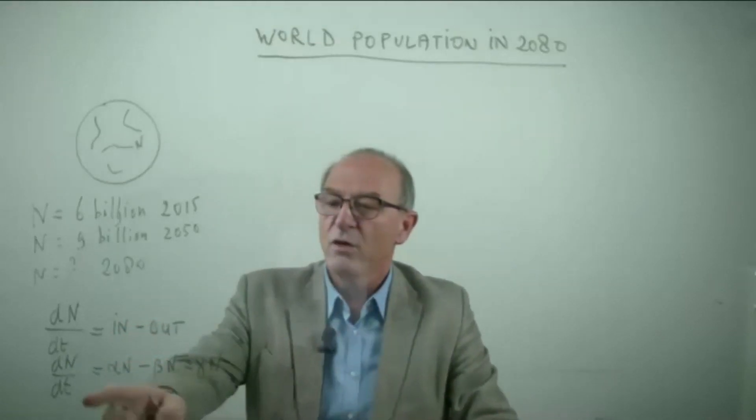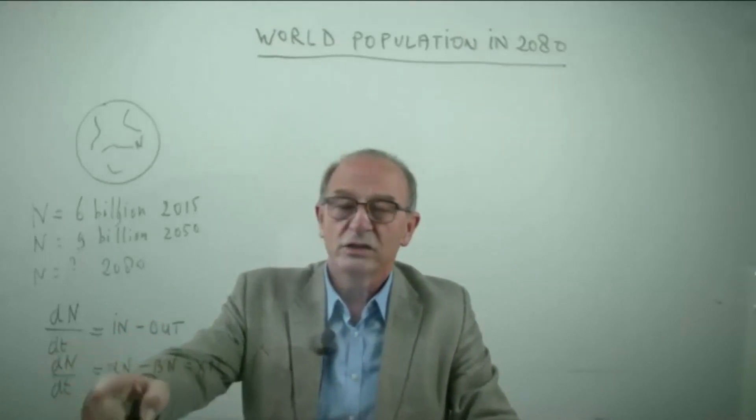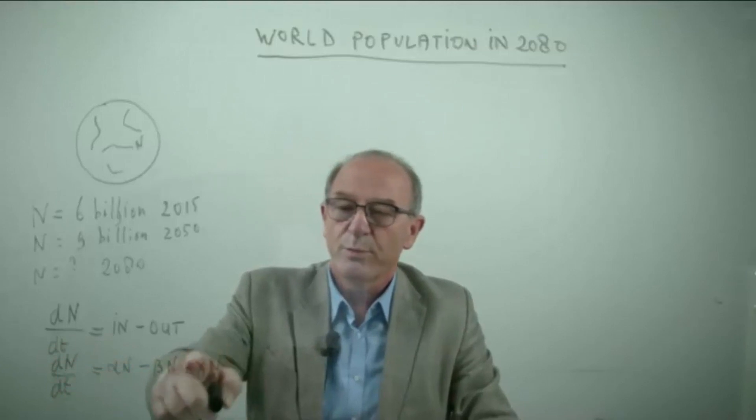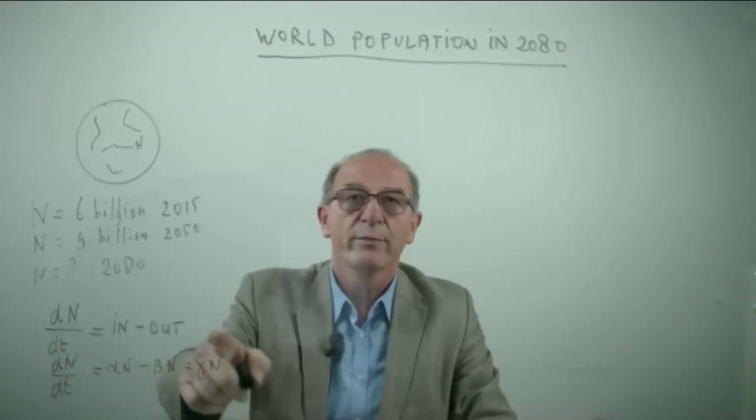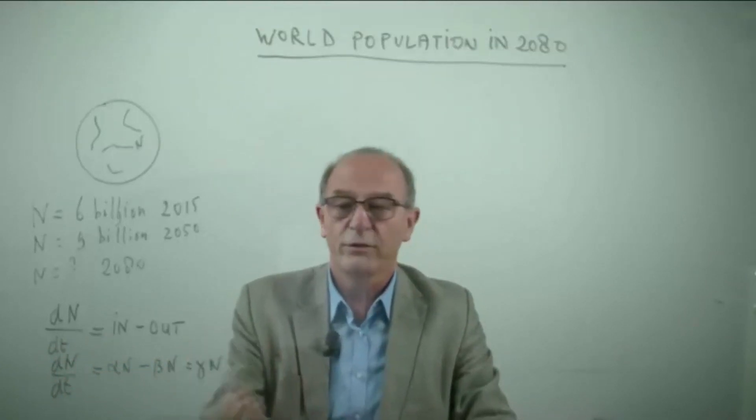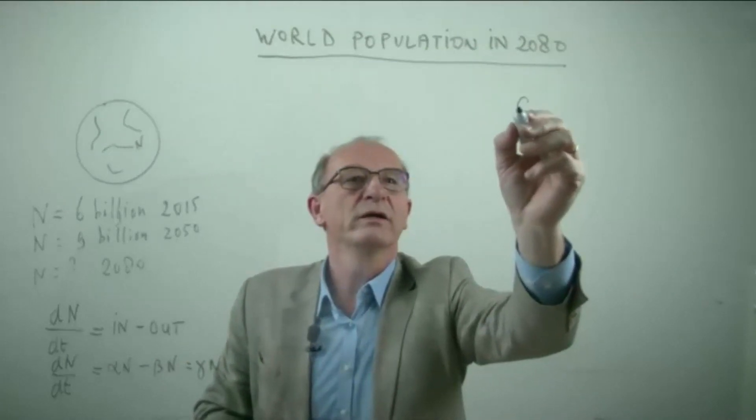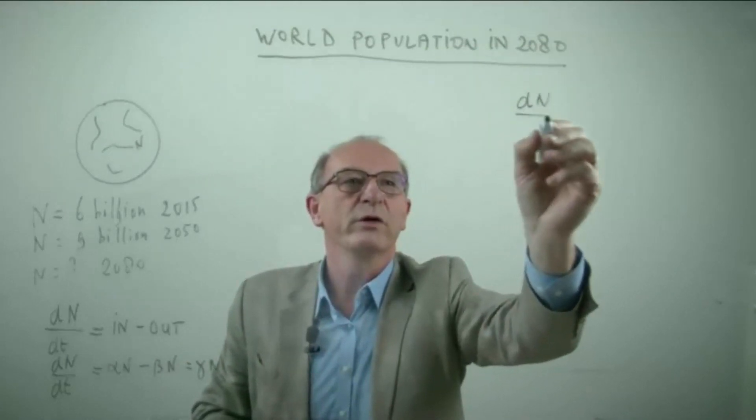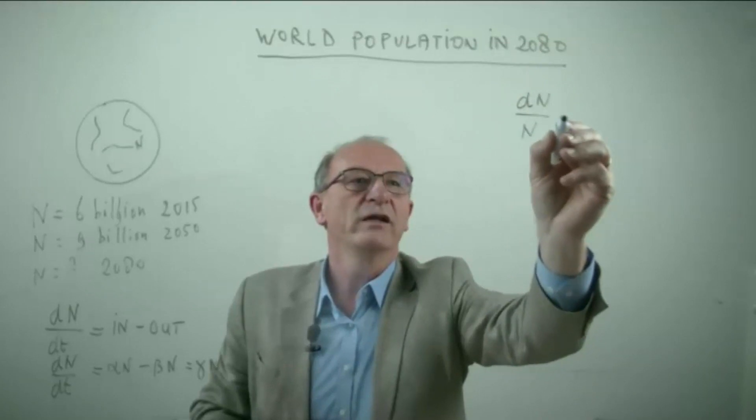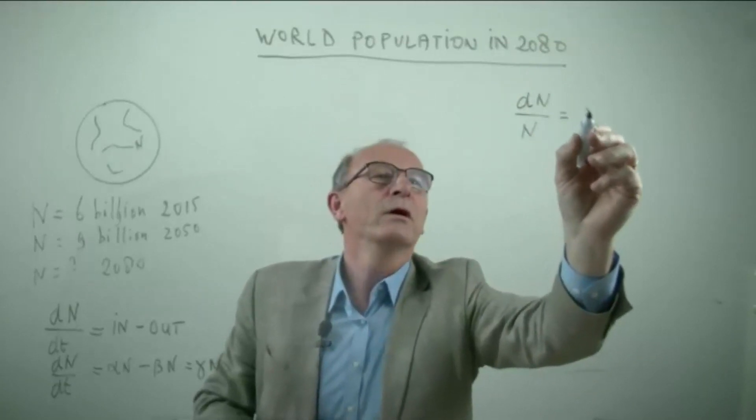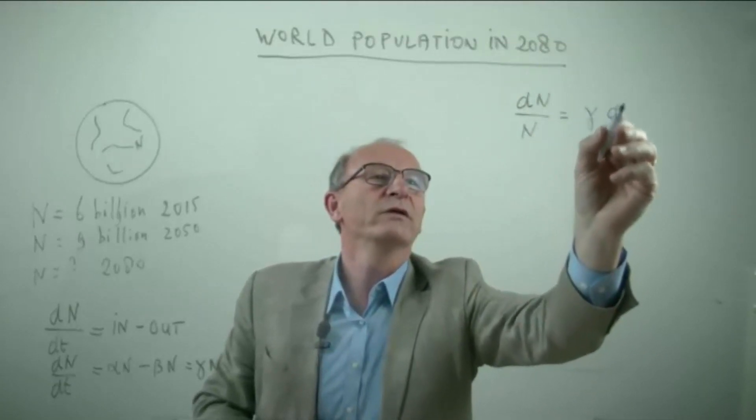In fact we have now a balance here. The change of the population is proportional to a constant multiplied by the number of the population. We have to solve this equation. We can do this by separation of the variables at both sides, and then we obtain gamma multiplied by the time.